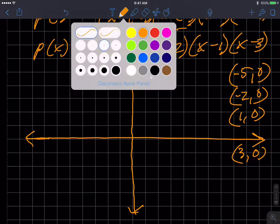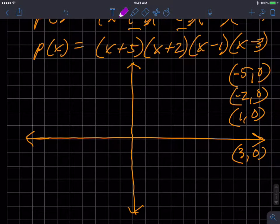So let's plot those points to change color here. So negative five, zero, negative two, zero, one, zero, and three, zero, one, two, three. Count, count, learn how to count.